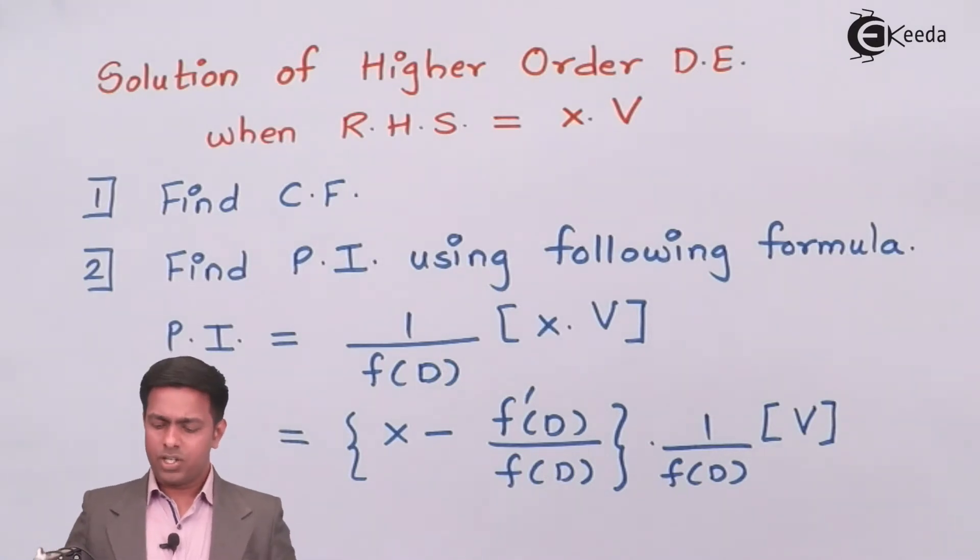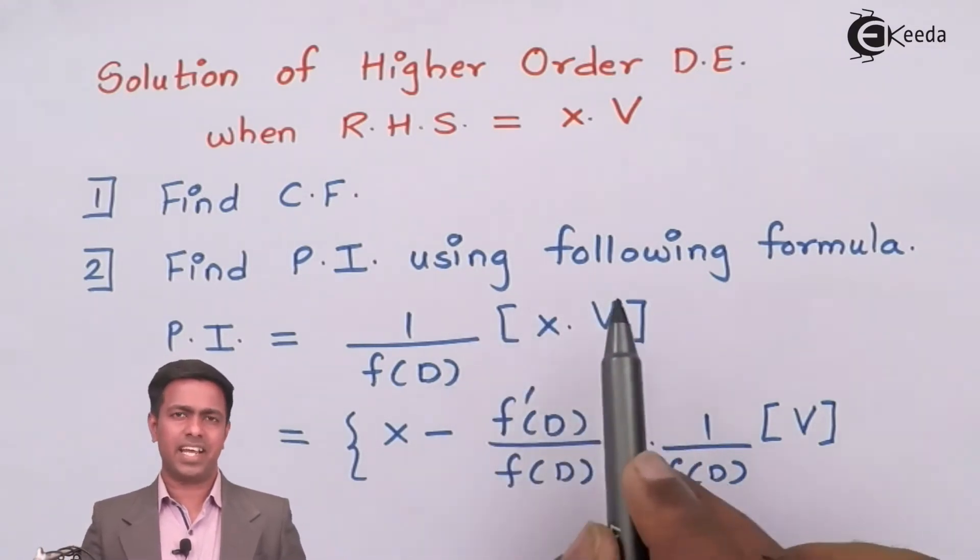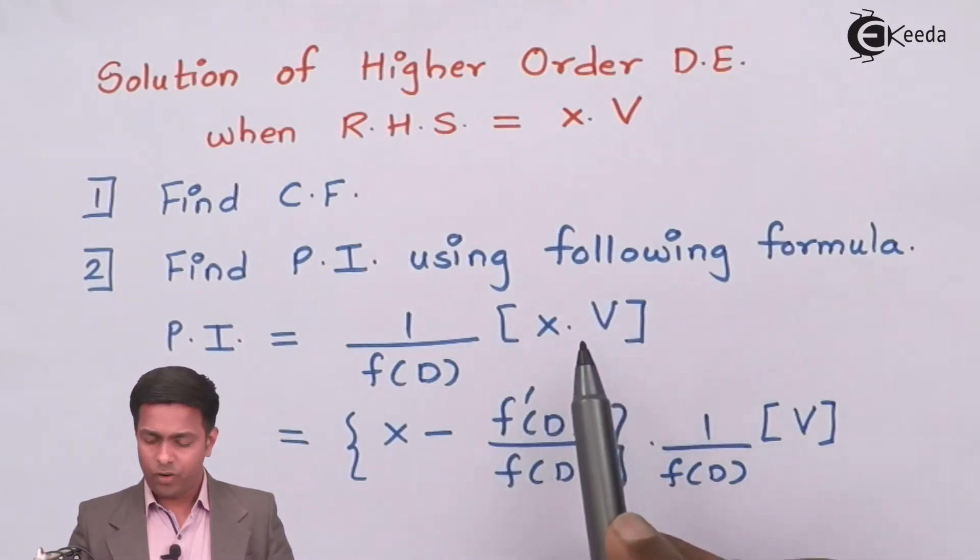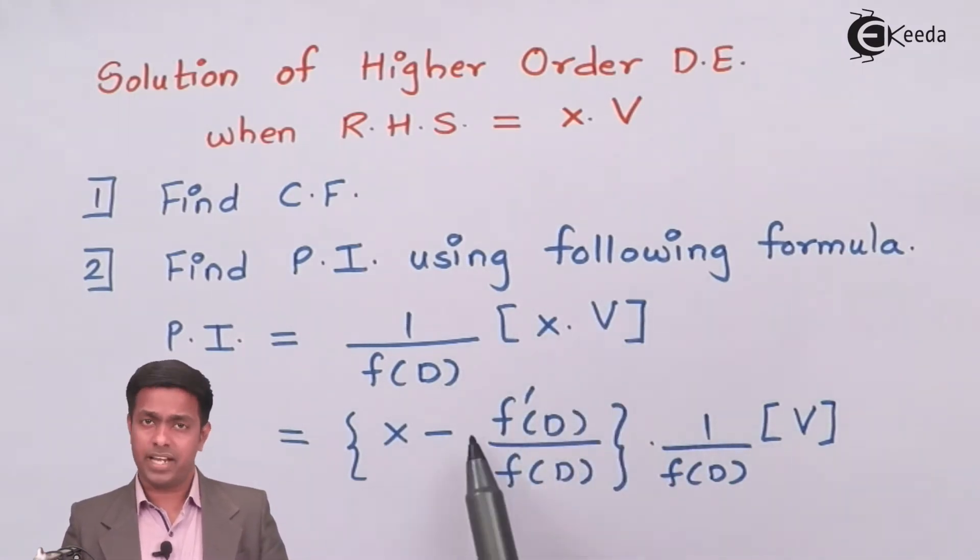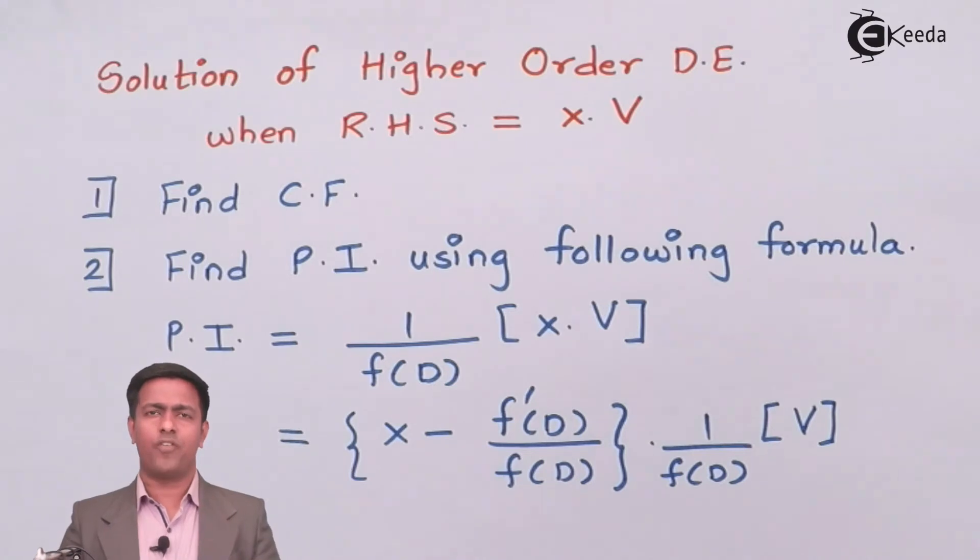What is the formula? It is 1/f(d) times x·V, where x·V is your right-hand side. Whenever we get right-hand side like this, the formula is [x - f'(d)/f(d)] times 1/f(d) times V. This means the derivative of that function of d, then close the bracket, and outside the bracket we write 1/f(d) into V.